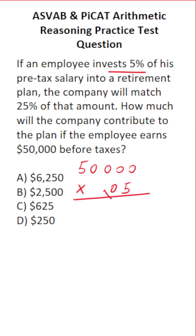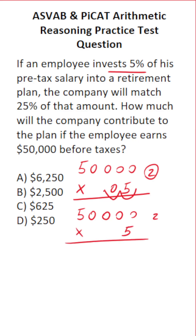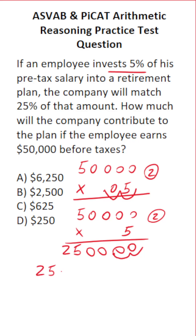To multiply this out, we move the decimal 1, 2 times to the right to make this 50,000 times 5, with two decimals to move back into our answer. 5 times 0 is 0 (four times), then 5 times 5 is 25. Moving our two decimals back in — 1, 2 — so 5% of $50,000 is $2,500. That's how much the employee is going to invest.